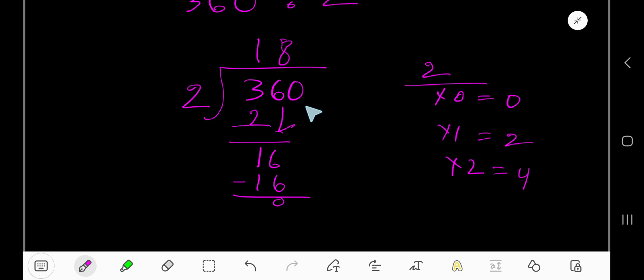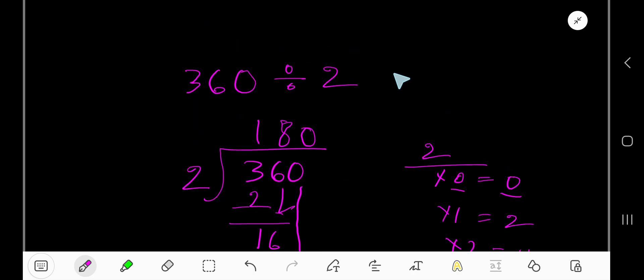Now bring down this 0. 2 goes into 0 how many times? 0 times. So write 0. 0 times 2, 0. That is, our result is 180. And this is the answer.